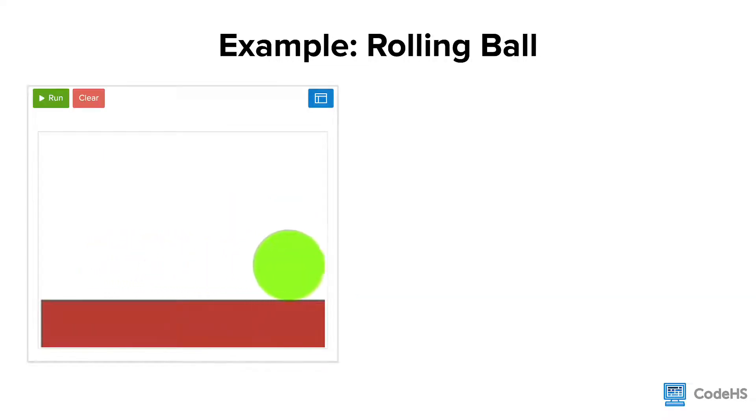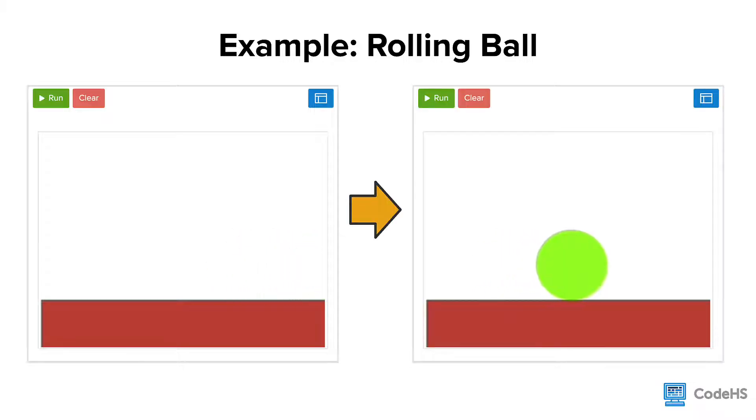Let's take a look at an example of a rolling ball. Instead of the ball rolling off the canvas, we want the ball to be able to bounce off the right and left walls.